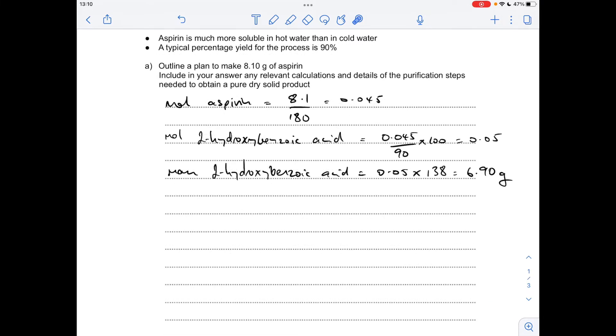Moving on to the purification process, we're going to use recrystallization to purify the aspirin. We're told that aspirin's more soluble in hot water than in cold. So we dissolve the impure aspirin in a minimum volume of hot water. We then cool it back down and that reforms the aspirin crystals, but crucially the impurities will stay dissolved.